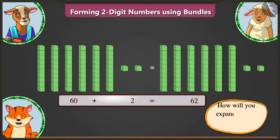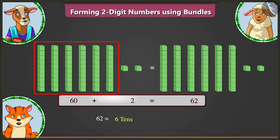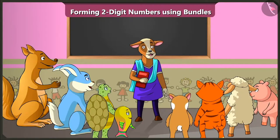Now, how will you expand sixty-two into two parts? Sixty-two means six tens and two ones. That means the two parts will be sixty and two. Absolutely right, Billy.